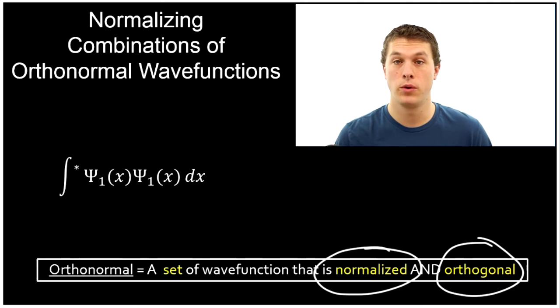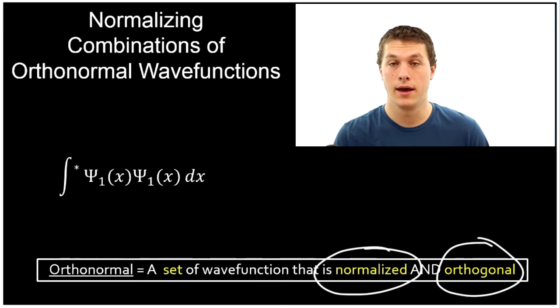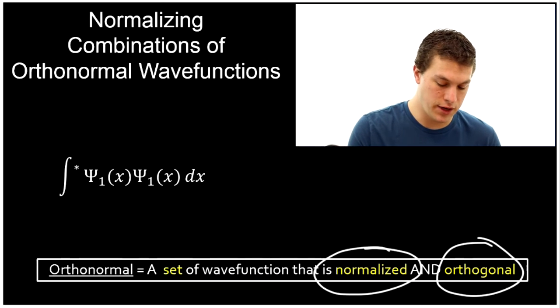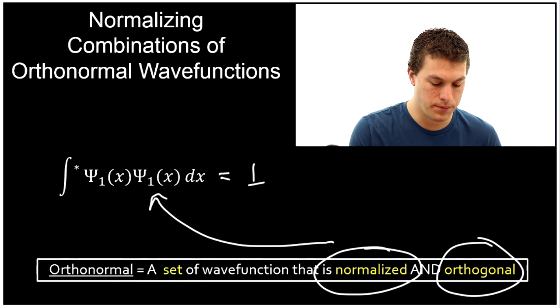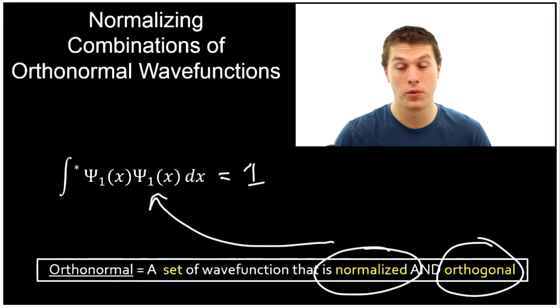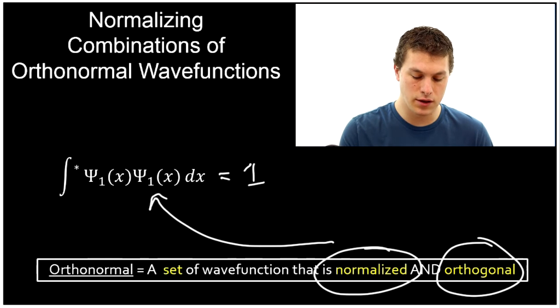Normalized means that when we multiply a wave function by itself and integrate — we follow this formula — we get out one. And we're probably already familiar with that property. Orthogonal — what does that mean?